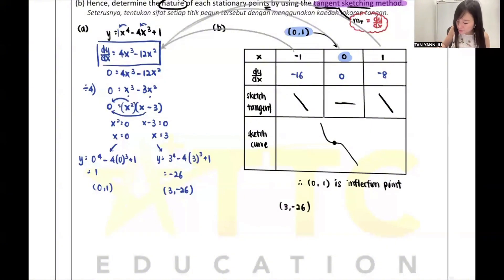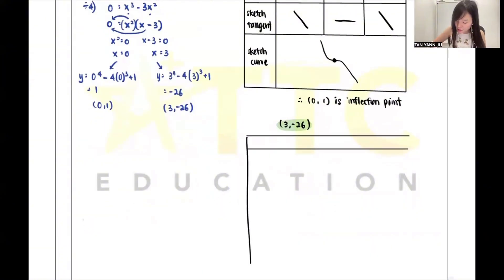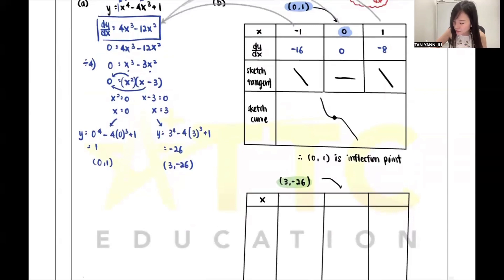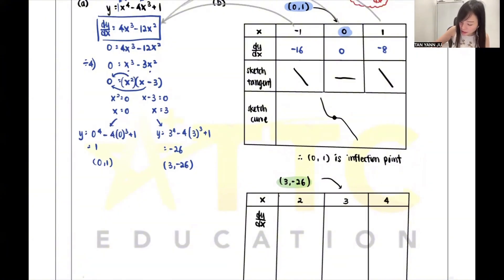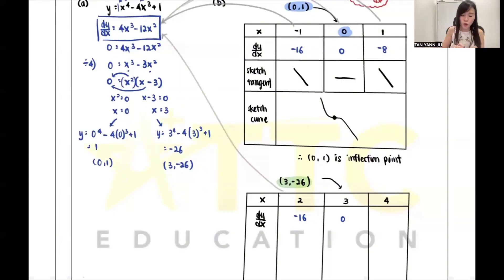For the stationary point x = 3, negative 26: now we're going to test this one. Draw the same table. For x values, put 2 before 3 and 4 after 3. Substitute into dy/dx: for x = 2: 4(2)³ - 12(2)² = negative 60. For x = 3: dy/dx = 0 because that's how we found x = 3. For x = 4: 4(4)³ - 12(4)² = 256 - 192 = 64.